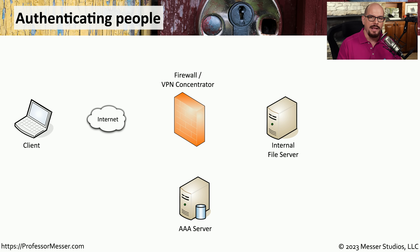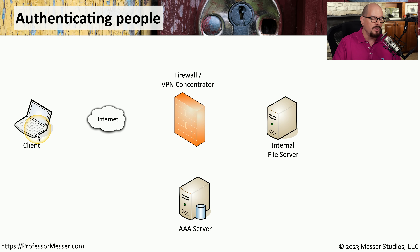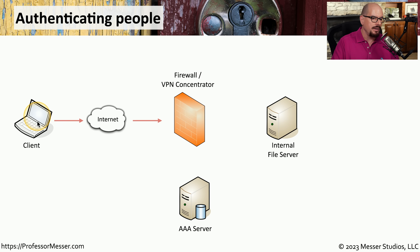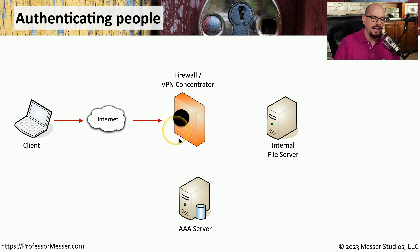Let's have a look at a practical example of using AAA. We're going to use the example of logging into a VPN server. In this case, it would be a firewall or VPN concentrator in the middle. You're on one side of that concentrator, and you need to use AAA to gain access to an internal file server. So we'll start with our client on the internet, and we'll access the VPN concentrator, which prompts us for a login. We're going to provide a username and password and send that information over to the VPN concentrator.